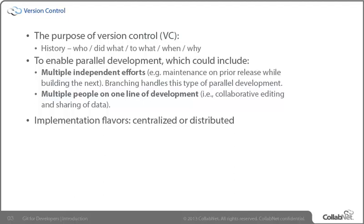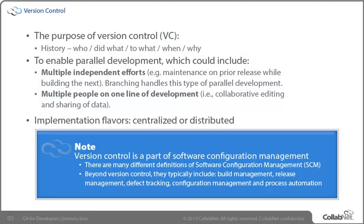It's also important to understand version control in relationship to another term that too often is used as though it is a synonym — that is, software configuration management, or SCM. There is no single definition of SCM because it depends on what any particular vendor provides. Beyond just having version control, which is the foundation of SCM, tools typically include build and release management, defect and issue tracking, and various types of process automation. All of those things are beyond what Git itself will provide.